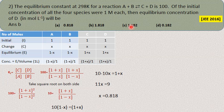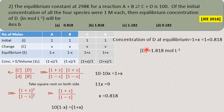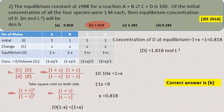The question asks for the equilibrium concentration of D, which is 1 + x = 1 + 0.818 = 1.818 moles per liter. This question appeared in JEE 2016. The answer is B.